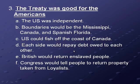The first two of these terms — independence and boundaries — more or less happened. The rest didn't occur as much because there was no real way to enforce any of them, and both sides didn't really want to listen. Especially the last one: Congress couldn't even collect taxes, so they had no way to make people return property to Loyalists.